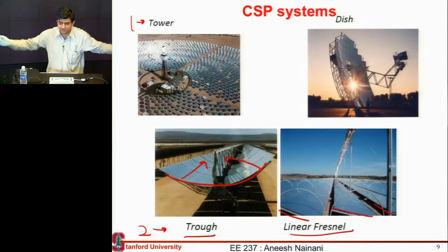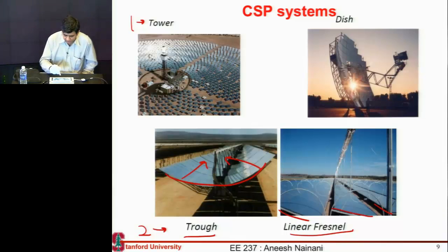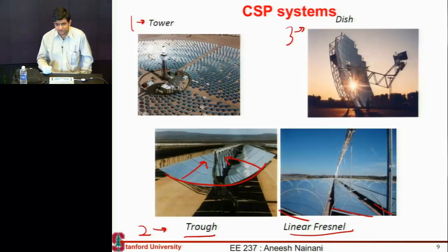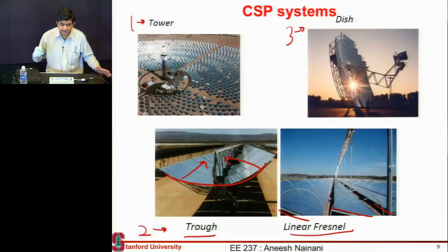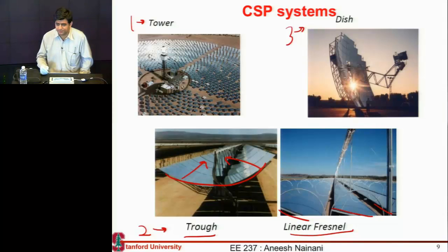So instead of having a big parabola, you have these small mirrors which equivalently give you the same concentration. And the third system is the dish, where you have this dish which is moving in both directions, keeping track of the sun. So it's similar to the dish we saw for concentrated photovoltaic, or these multi-junction cells.